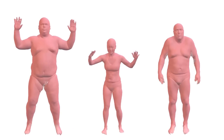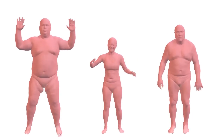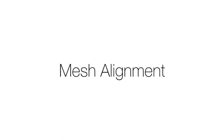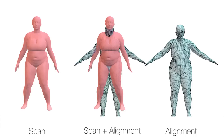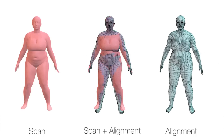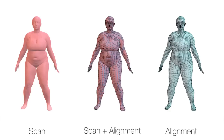Subjects span a range of sizes, with body mass index values ranging from 20 to 47. To build the Dyna model, a template mesh is aligned to the scans, bringing all the data into correspondence across subjects and time. This is a fully automated process, resulting in 70,000 meshes containing complex motions and varying body shape.